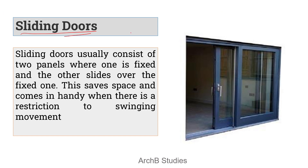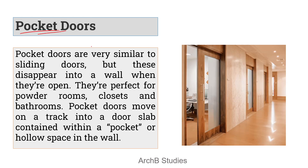Next is the sliding door. Sliding doors are similar to sliding windows. They usually consist of two panels where one is fixed and the other slides over it. This saves space and is useful when there is a restriction on swinging movement. It's not compulsory to have two panels — there can be three or four panels depending on the space and the area of opening required.